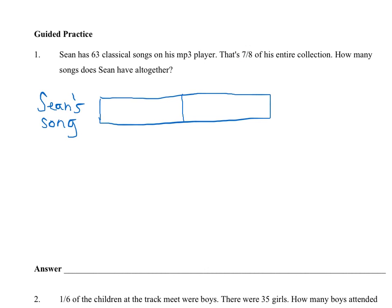To break a whole up into eight equal parts, or eighths, we'll find what half of a whole is. Then we'll find what half of each half is. Now I have quarters, or fourths, and now I'll find half of each fourth. Now I have one, two, three, four, five, six, seven, eight equal pieces.